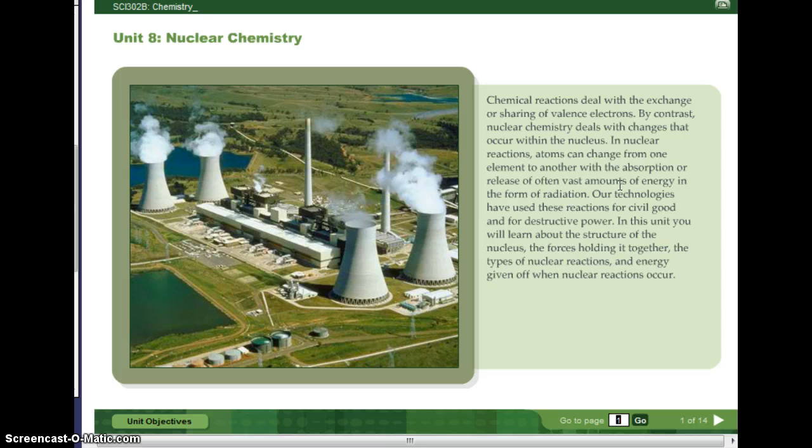Chemical reactions deal with the exchange or sharing of valence electrons. By contrast, nuclear chemistry deals with the changes that occur within the nucleus. In nuclear reactions, atoms can change from one element to another with the absorption or release of often vast amounts of energies in the form of radiation.